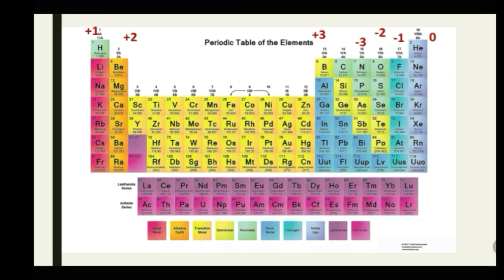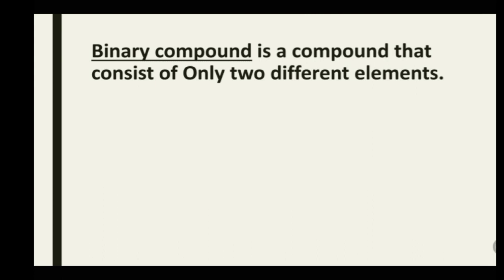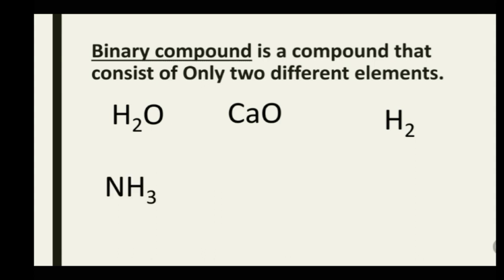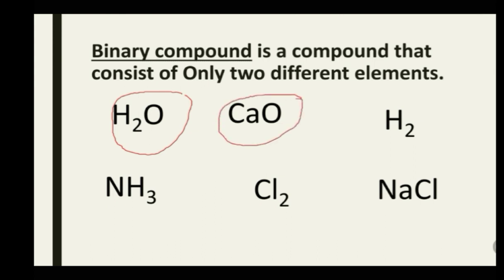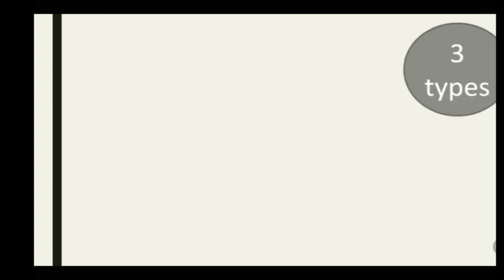Now let's look at what binary compounds are. A binary compound is a compound that consists of only two elements. Examples include H₂O, CO, H₂, NH₃, and NCl. H₂ and Cl are also binary compounds — they each consist of only two different elements. Anytime a compound deviates from this definition, it is not a binary compound.